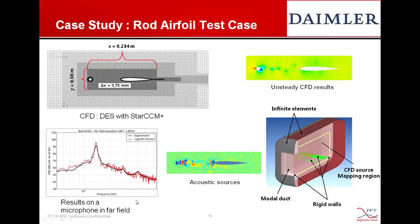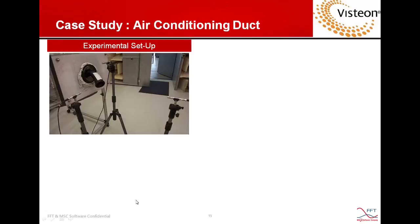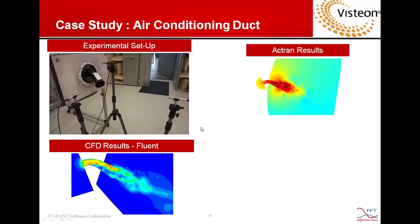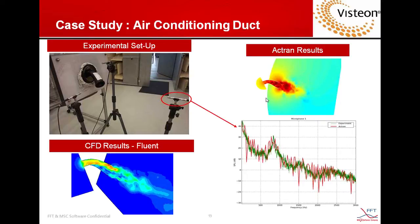The next case involves air conditioning ducts in a car. The duct was placed in a semi-anechoic room and the sound pressure level due to turbulence from the duct was measured at a microphone position. CFD was performed in Fluent using LES simulation, then Actran performs the acoustic analysis. Again, we have very good correlation between experiment and simulation — a very successful case in air conditioning.